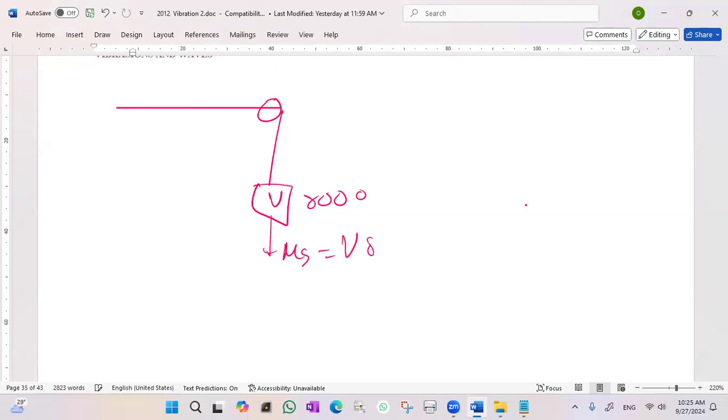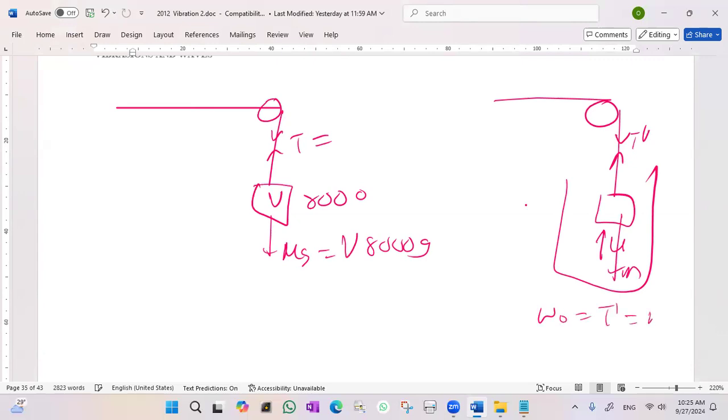T dash equals mu. Because this is T minus, so mg is equal to T dash. T wala aega, T dash wala aega.